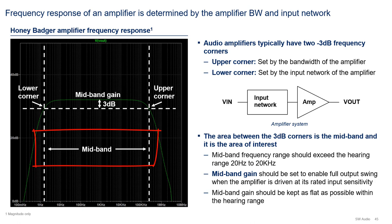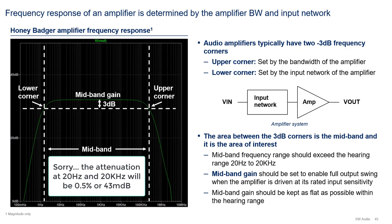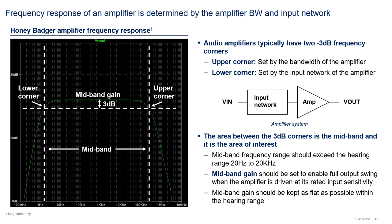The mid-band should be wide enough to encompass the hearing range of 20 Hz to 20 kHz, and actually should be wider than that. The current trend is to make the mid-band about 10x wider than the hearing range at both the upper and lower ends, so the attenuation at the frequency corners is about 0.5%, or 43 mdB. The mid-band gain should be set to enable full output swing when the amplifier is driven at its rated input sensitivity, and should be kept as flat as possible to keep distortion low.